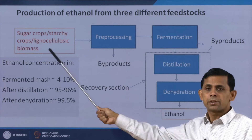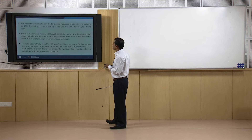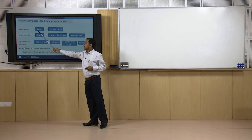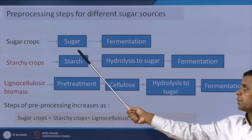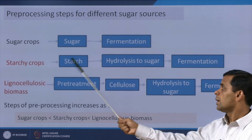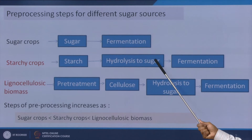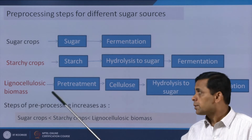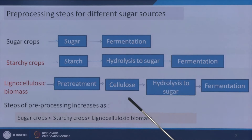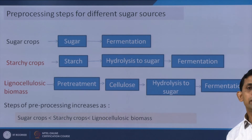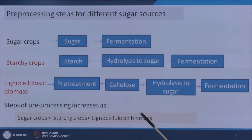For sugar crops, the route is: sugar crops → sugar → fermentation — the simplest method. For starchy crops, we get starch from the crop, starch has to be hydrolyzed to convert it into sugar, and then sugar is further fermented. For lignocellulosic biomass, pretreatment is a must; pretreatment gives cellulose and hemicellulose, which are hydrolyzed to get sugars, and then those go to fermentation. The pre-processing steps vary depending on the feedstock, increasing in complexity from sugar crops to starchy crops to lignocellulosic biomass.